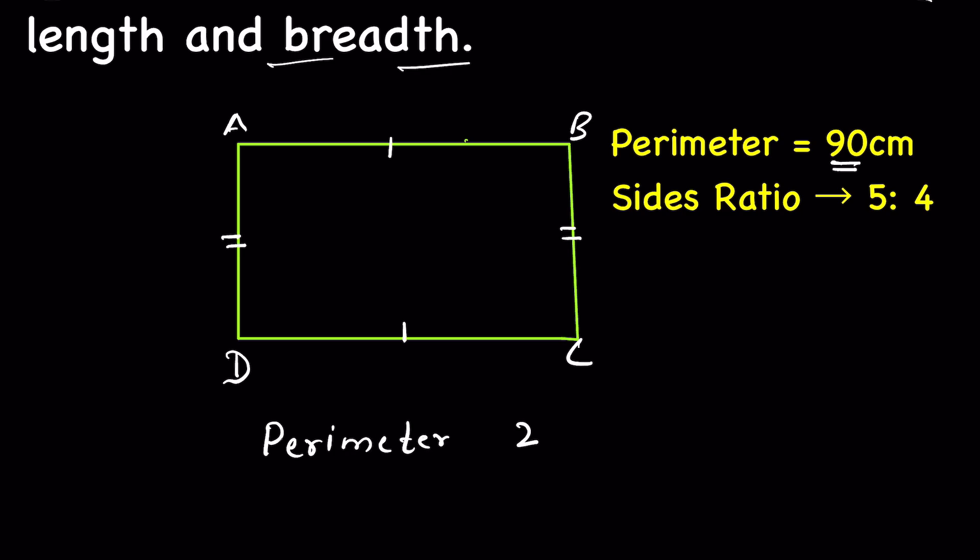2 times length plus breadth, because perimeter is actually the sum of all four sides and since the opposite sides are equal, so we can write it as 2l plus 2b. If this is length and this is breadth...